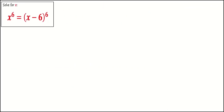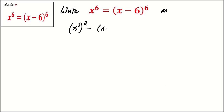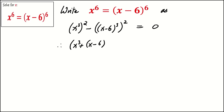There are many methods to solve this equation. I suggest the following: write the left hand side of the equation as the difference of two squares. Hence, it can be factorized as x cubed plus (x minus 6) cubed, times x cubed minus (x minus 6) cubed, equals 0.